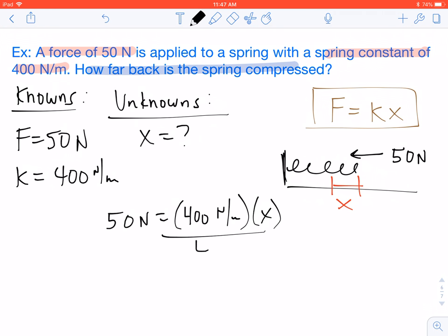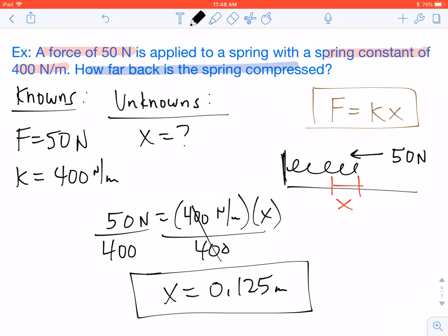So to get x all by itself, we will divide by 400 on both sides. And we end up with an answer of 0.125 meters. So that's how far back it was compressed.